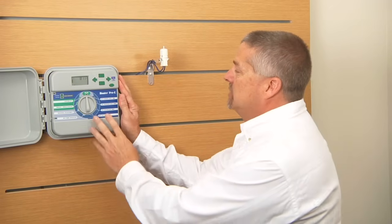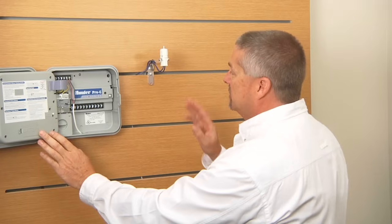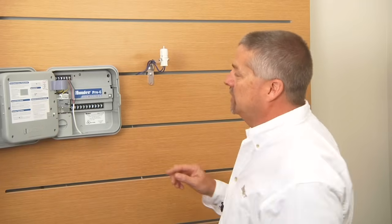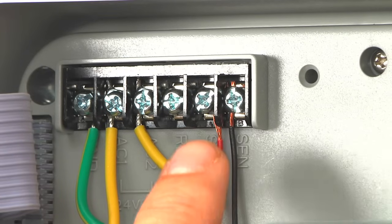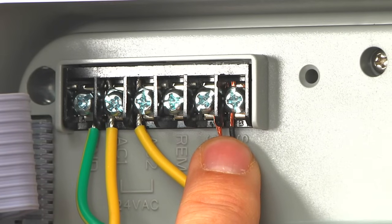Now, the second easy check for that solution is to make sure that when you installed the rain sensor, you removed the chrome jumper tab, which connects the two sensor terminals.